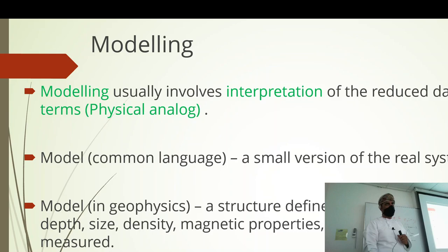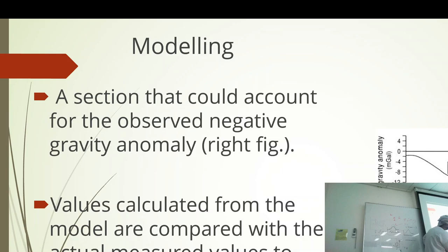One of the lab tasks or assignments for gravity technique involves a type of modeling similar to this. You will be asked to make a model — a gravity profile showing observed values and calculated values side by side. The observed and calculated values are plotted on top of each other, and ideally they should be so close that they are indistinguishable — exactly overlapping, confirming that your model is a good match for the real geology.